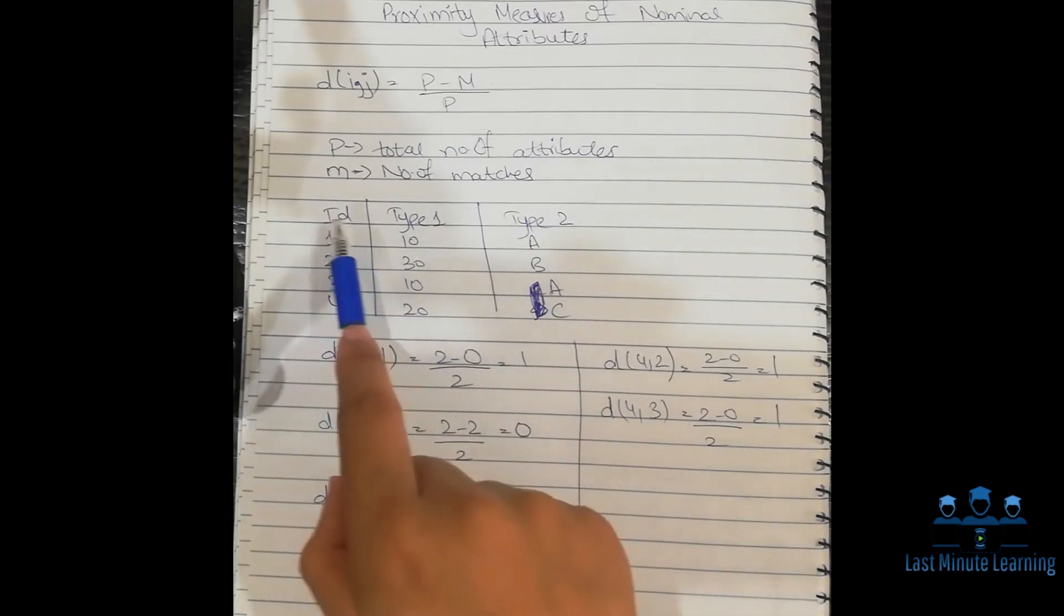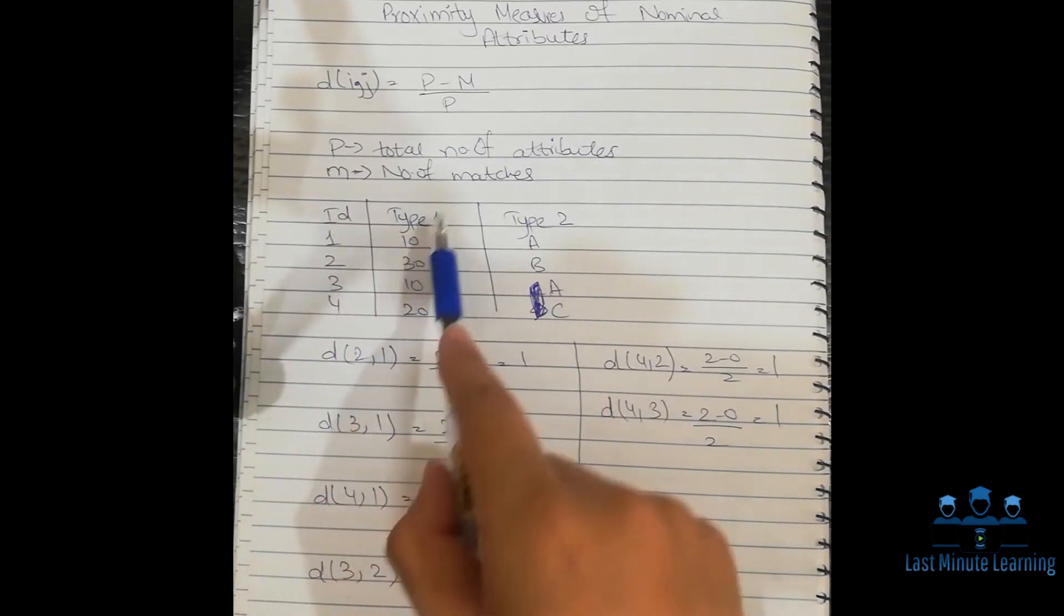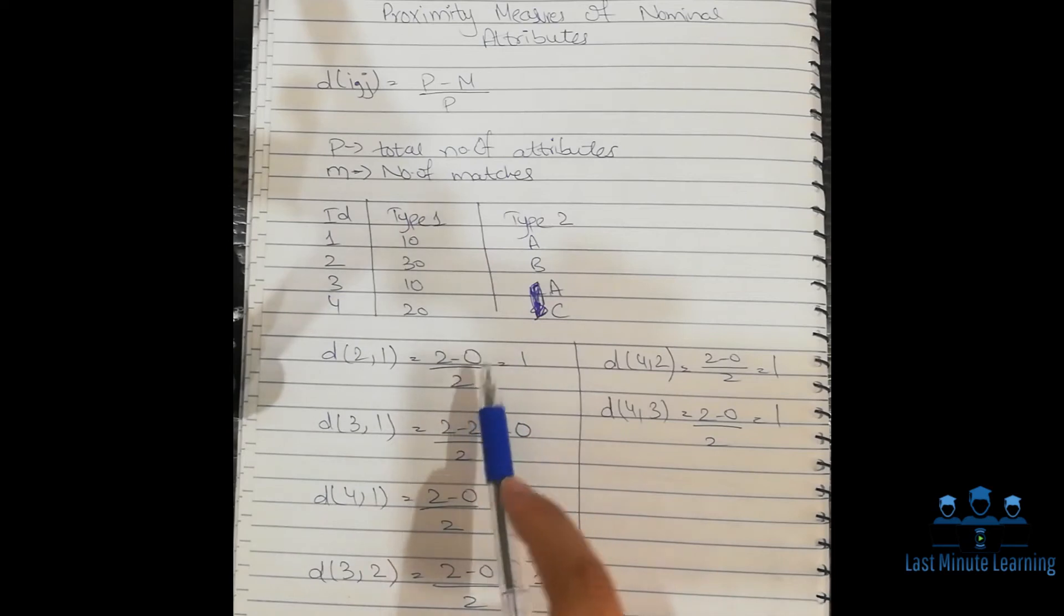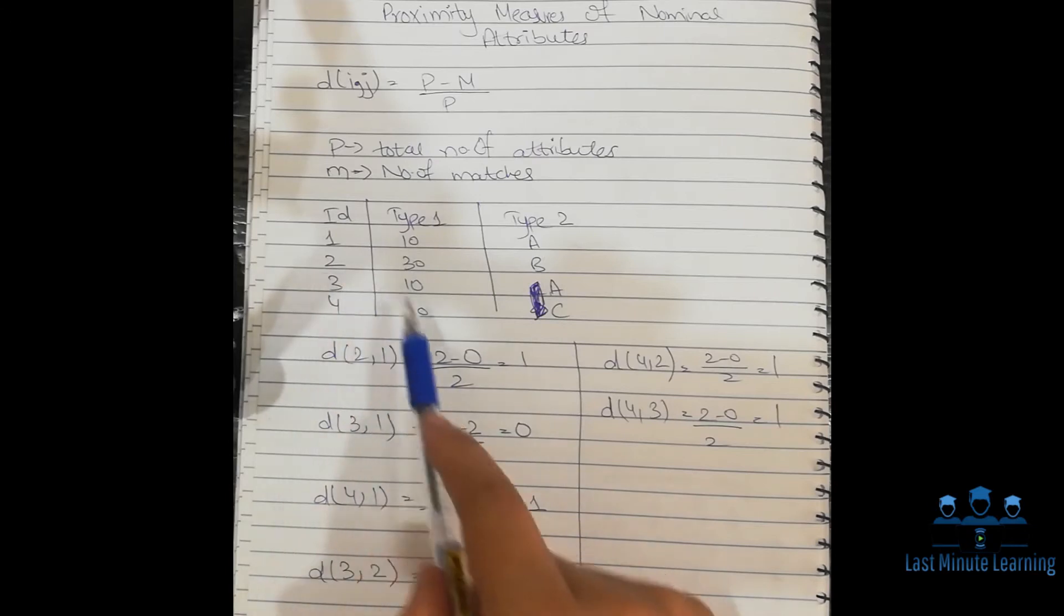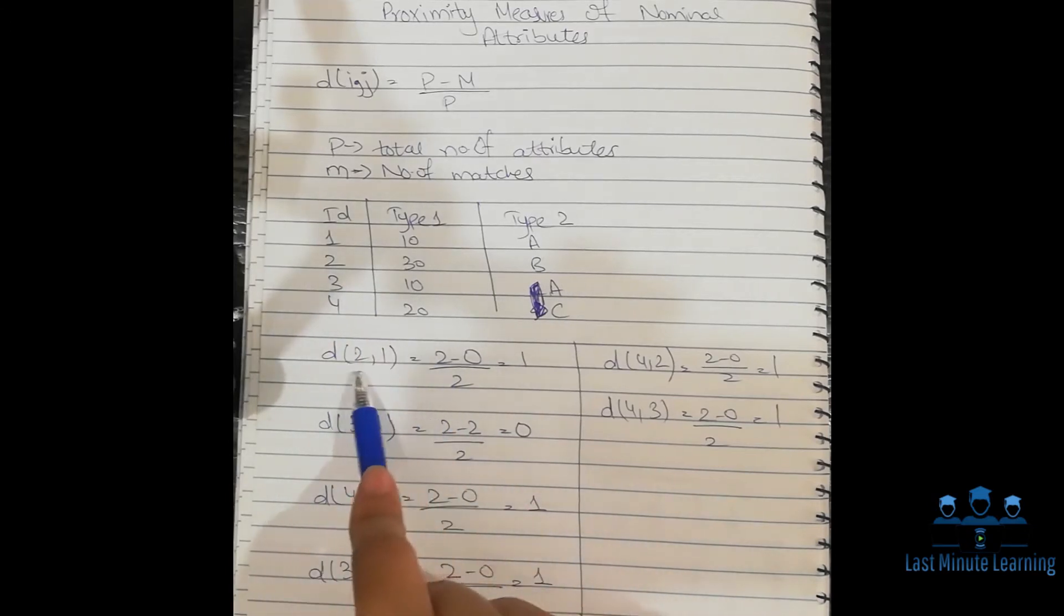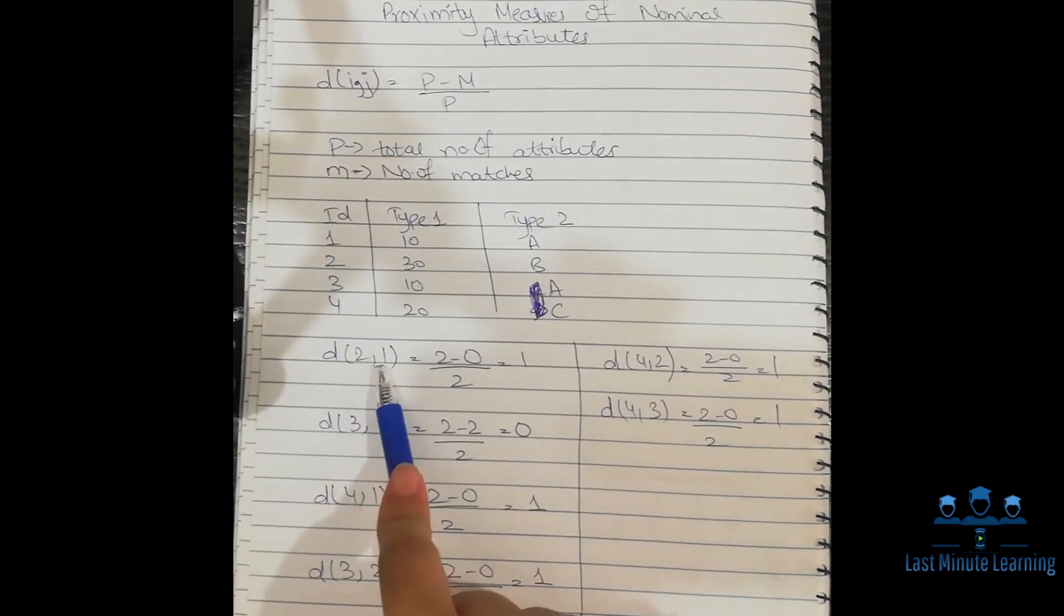Now there is an example. We have been given four IDs, Type 1 and Type 2. How will we solve this example? We have to measure the dissimilarity between each of these. Firstly, we have to measure d(2,1).